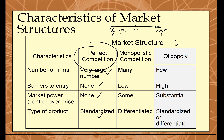Now looking at oligopoly: some textbooks incorrectly list 'few firms' as a characteristic, but that's not entirely accurate. There can be as many firms in an oligopoly as in perfect competition. What it really means is that a few firms control most of the market supply. Think of the market as a pizza — three or four firms control the large portion, while the rest of the market is divided among many firms with very small market shares. So there could be thousands of firms in an oligopolistic industry, but three or four control most of it.